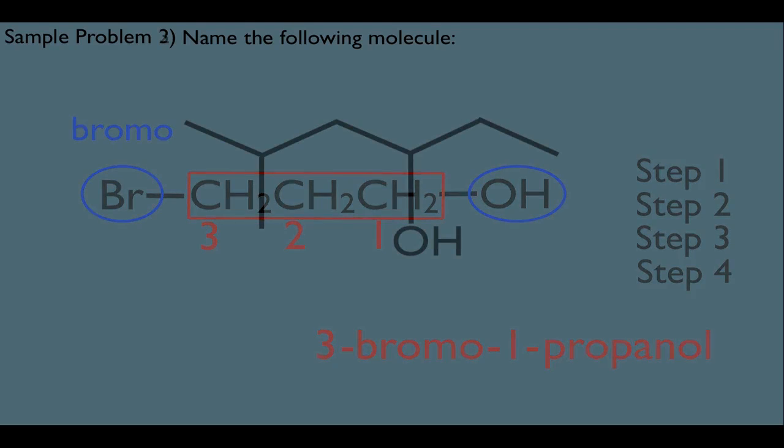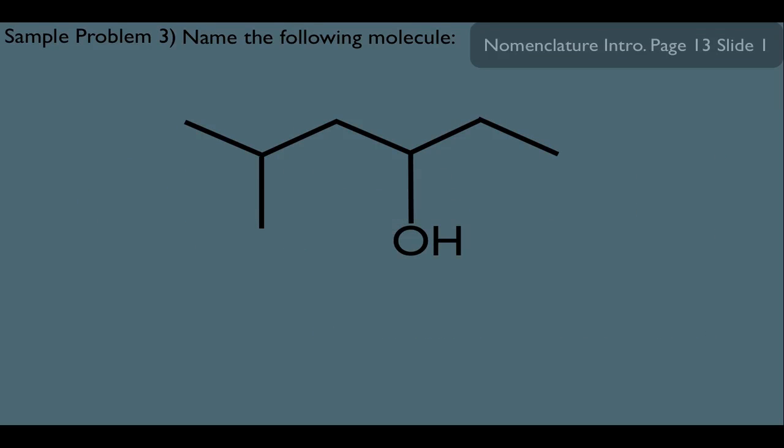Now, let's look at another example here, and let's use a skeletal structure to do this. For step one, let's find our longest chain that has the alcohol carbon in it. Here it is. If you count, you'll see six. That makes the parent name hexanol.